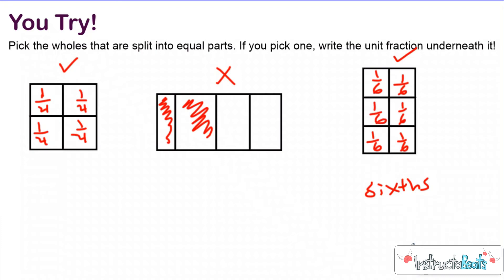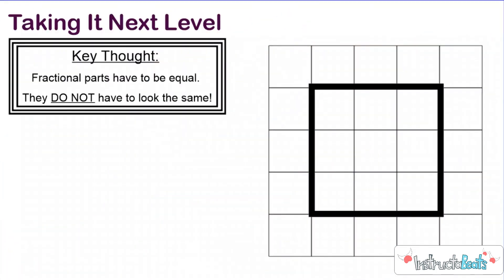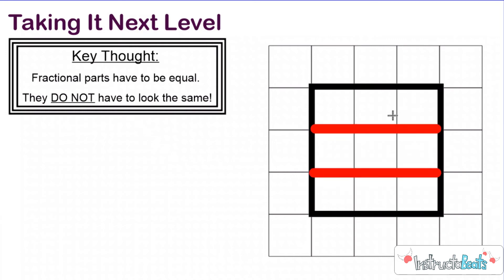So hopefully you're kind of understanding what a fraction is and how it's an equal part of a whole. Let's take it to the next level. Our key thought is that fractional parts have to be equal, but they don't have to look exactly the same. Here I put a grid behind this shape — we're just going to use it to check if our parts are equal. If I split this with a red line, you can clearly see that I made thirds because I made three equal parts. Each part is made up of three units, so I just made thirds right there.